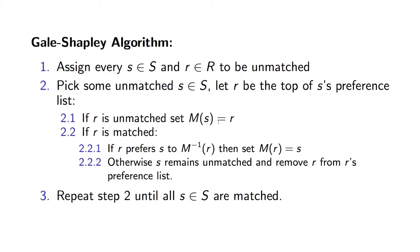This is an algorithm that shows that a stable pairing always exists and also will give one. So, you just follow through these steps, and I'm just going to do it in an example now.